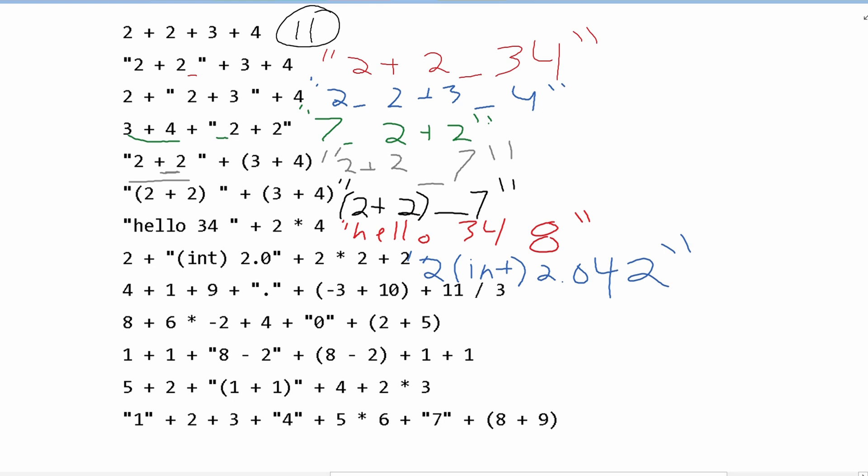Next, we have 4+1+9. Since there isn't a string yet, it doesn't recognize this as a string — these are pluses for addition. So here we are going to have 14. Then we have a decimal, and since we have a string now, we surround it with quotes. Then since the next part is in parentheses, it's going to be addition: negative 3 plus 10 is 7. This plus is a combination, so we have 14.7 so far. Then we combine 11 divided by 3, which is 3. So our final answer is the string "14.73".